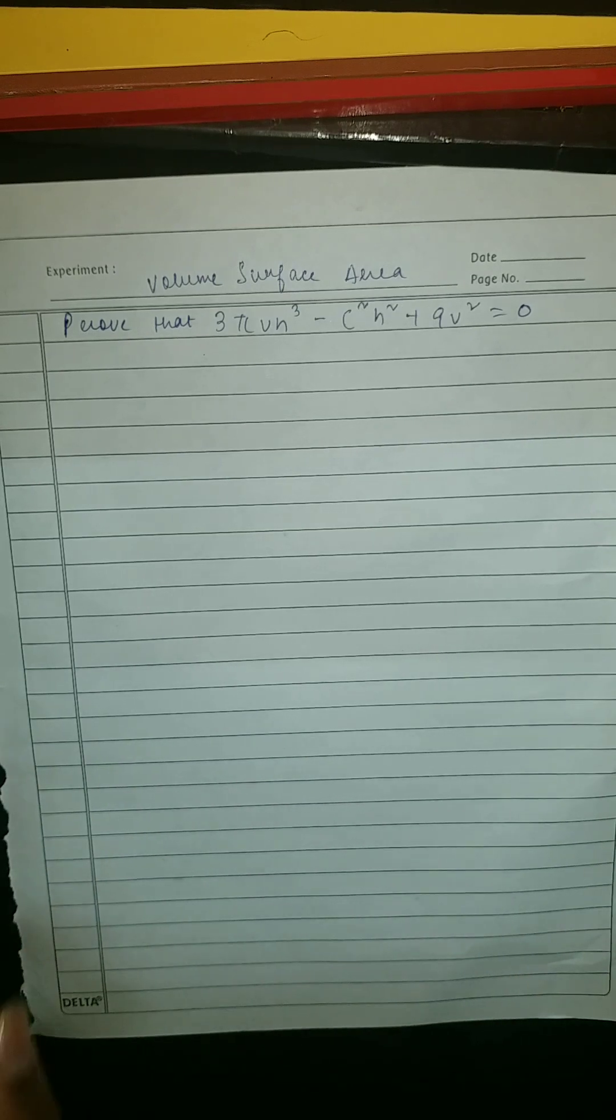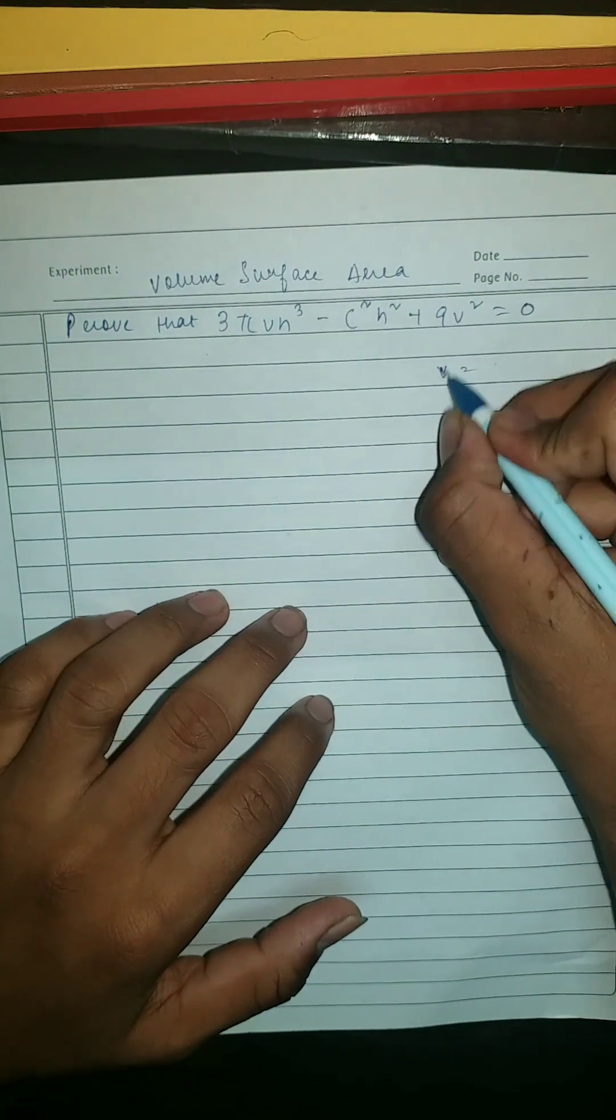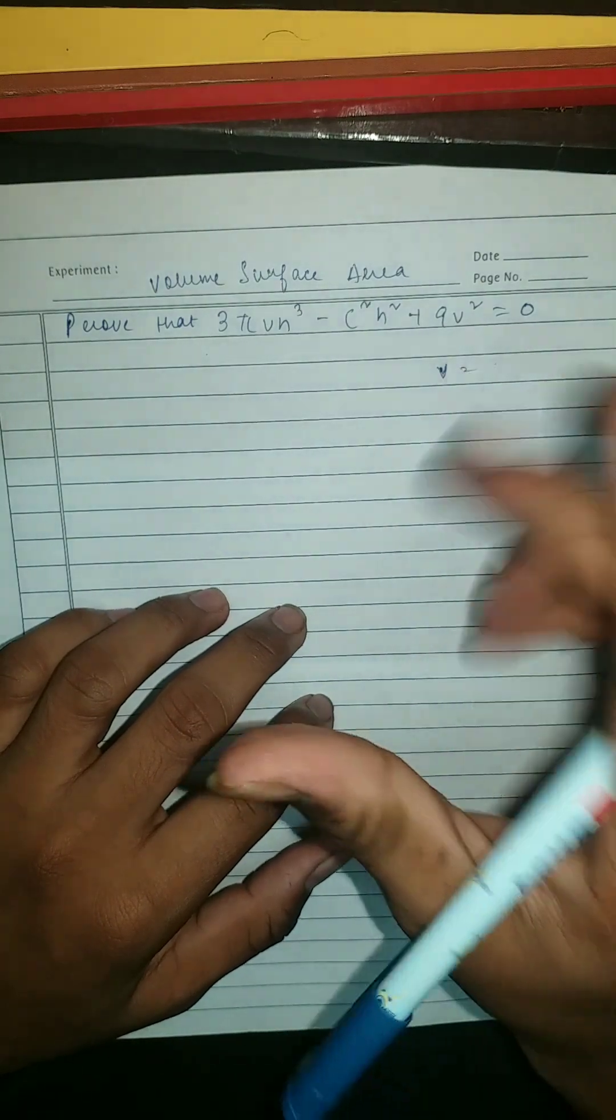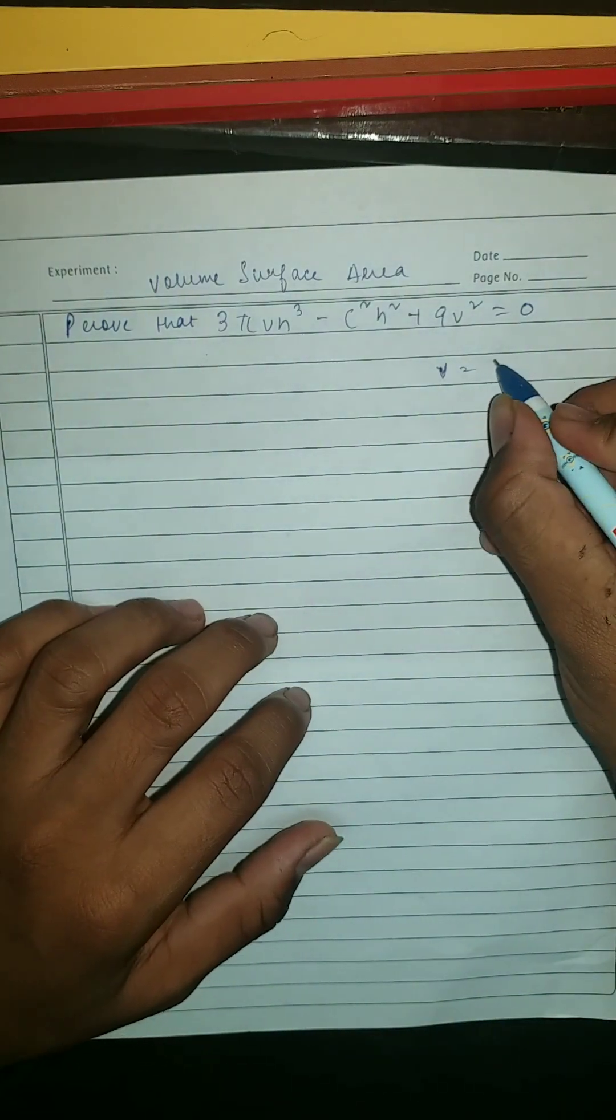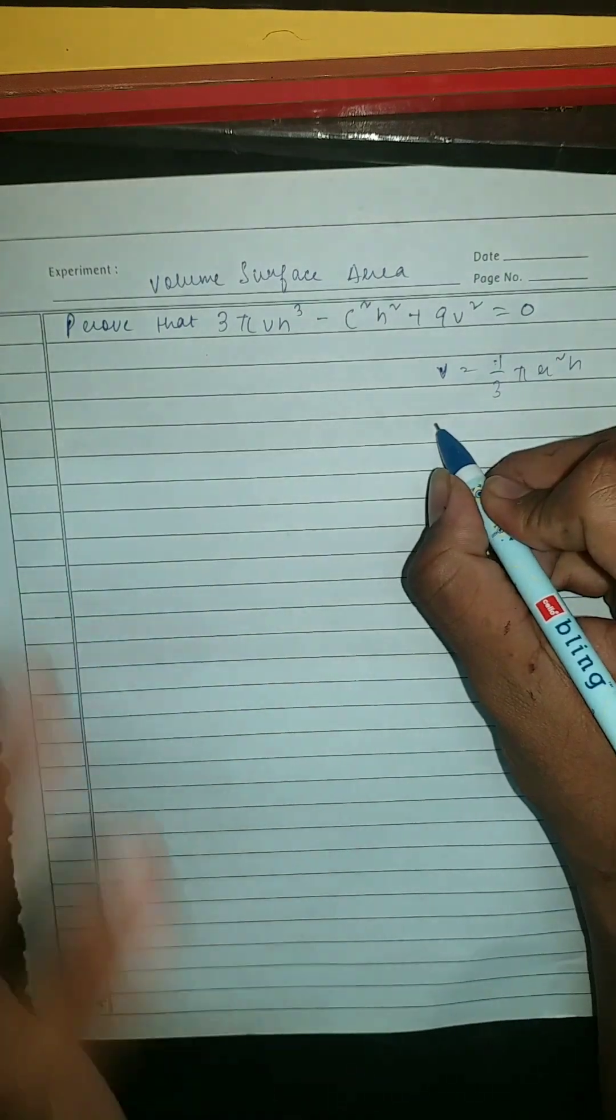We're going to solve this question guys, it's a very good question. So here this is given, we're gonna write all the formulas like the volume of your cone. So this is 1/3 π r² h. We're gonna write every formula here.